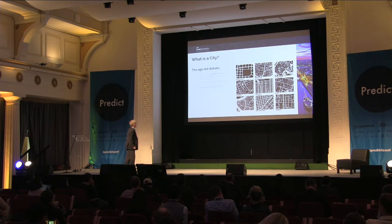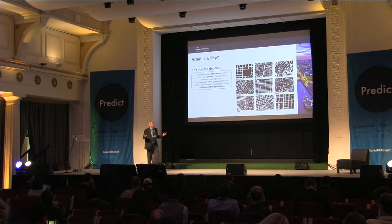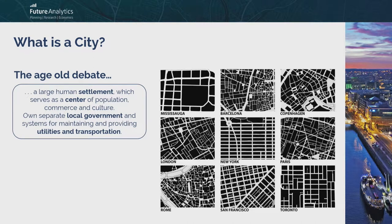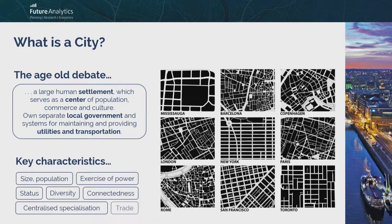So what is a city? The age-old debate about what really makes a city — what are its ingredients? It's about a human settlement that serves as a center of population and generally has its own local government, so it's autonomous in that sense, maintaining and providing utilities and transportation. A key phrase here is critical mass — the level of population that needs to be served and the services and facilities required. The characteristics of a city include its size, population, exercise of power, status, diversity, connectedness, centralized specializations, and levels of trade.